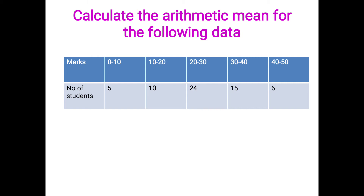For the continuous data example: marks 0–10 with 5 students; 10–20 with 10 students; 20–30 with 24 students; 30–40 with 15 students; 40–50 with 6 students. Here, marks is your x and number of students is your f.